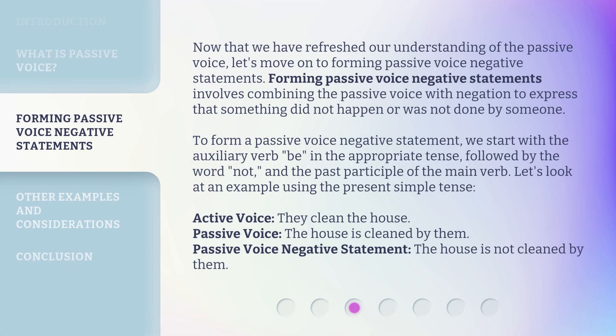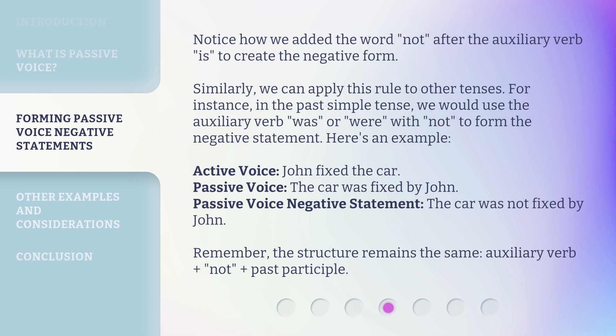Now that we have refreshed our understanding of the passive voice, let's move on to forming passive voice negative statements. This involves combining the passive voice with negation to express that something did not happen or was not done by someone. To form a passive voice negative statement, we start with the auxiliary verb 'be' in the appropriate tense, followed by 'not,' and the past participle of the main verb. Notice how we add 'not' after the auxiliary verb 'is' to create the negative form.